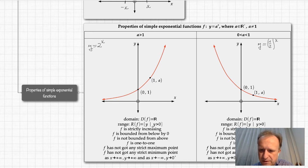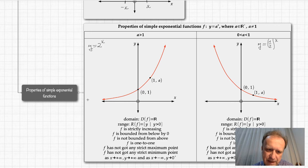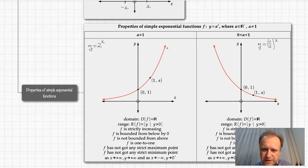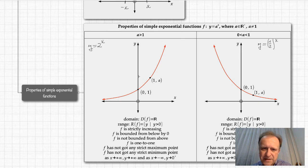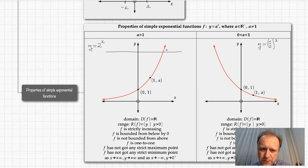The range in both cases is all positive real numbers — the function never reaches zero or below, always staying above the x-axis. In the first case (a > 1) the function is strictly increasing; in the second case (0 < a < 1) it is strictly decreasing. In both cases the function is bounded from below by zero but not bounded from above, since the function will always exceed any fixed horizontal line.